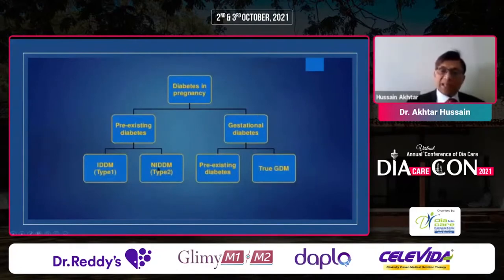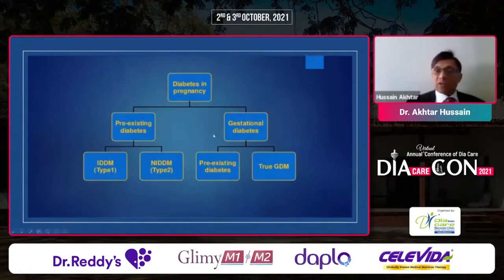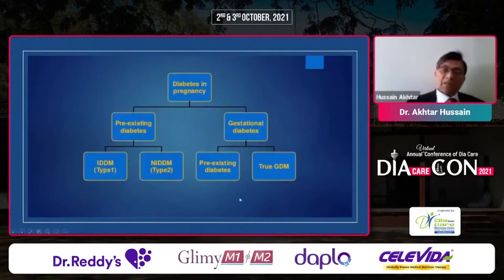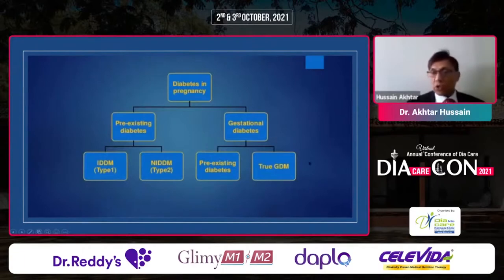Diabetes in pregnancy includes type 1, type 2, pre-existing diabetes, and true GDM. Whenever we consider all these categories, we need to concentrate on the true GDM cases. Unfortunately, there are many confusions and a tendency to include everything — pre-existing diabetes and gestational diabetes together — and we need to be careful to concentrate on true GDM cases.